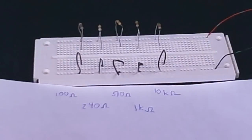One of the questions that often comes up with digital circuits is, what resistance value should you use with an LED? Here I have five different resistors: a 100 ohm resistor, a 240 ohm resistor, a 510 ohm resistor, a 1 kiloohm resistor, and a 10 kiloohm resistor.